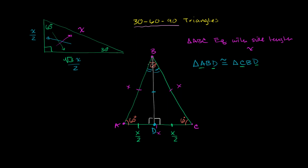Not only do we know that, but when we dropped this altitude, we showed that the two base angles must be congruent and their measures add up to 60. So if two equal angles add up to 60, each one is going to be 30 degrees. So by dropping this altitude, I've essentially split the equilateral triangle into two 30-60-90 triangles. We've already shown that if the side opposite the 90-degree angle is x, the side opposite the 30-degree angle is x over 2. Now we just need the side opposite the 60-degree angle.